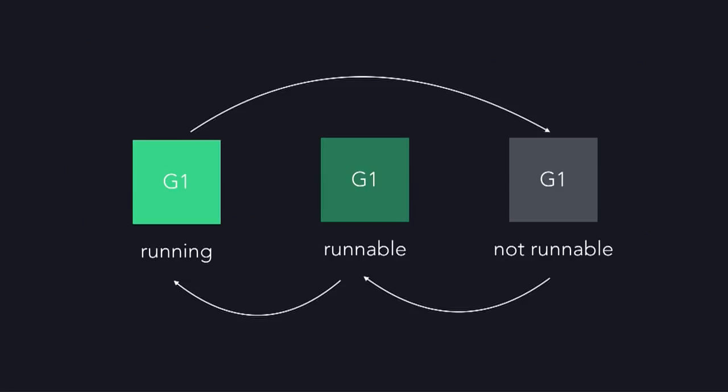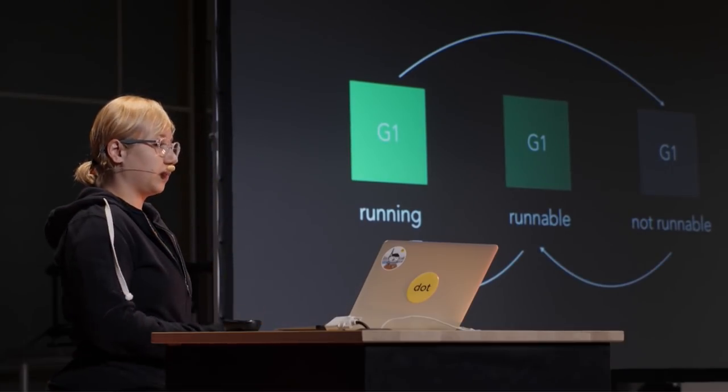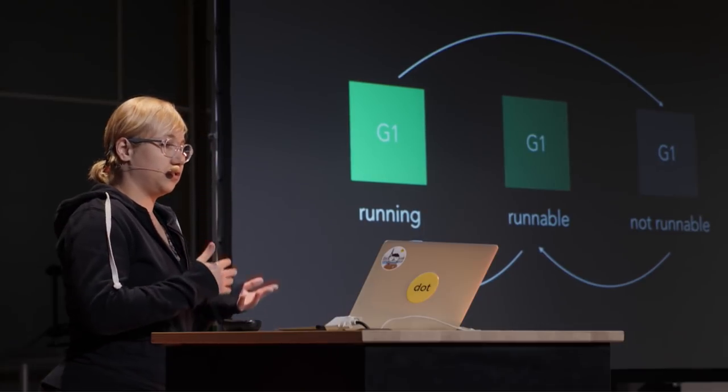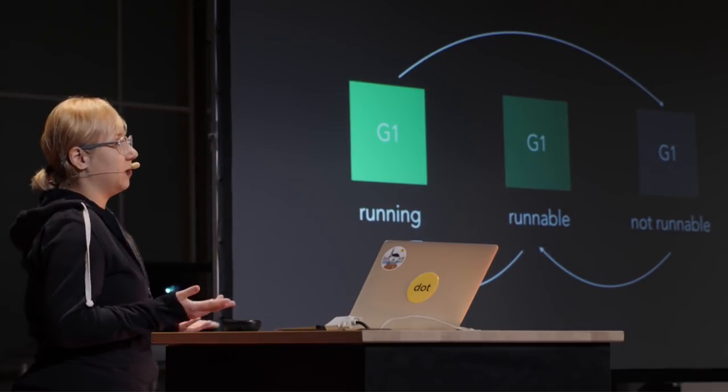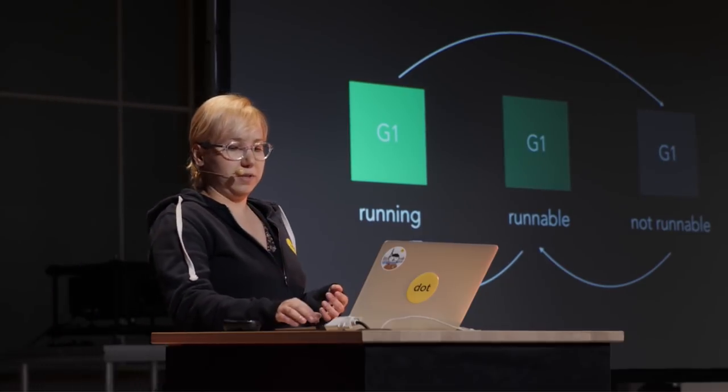The life of a Go routine is simply between these fundamental states. A Go routine is either currently running, or ready to run — runnable but waiting for its turn — or it's not runnable, for example it's blocked and waiting for a system call. At any time, the scheduler's job is to run the runnable Go routines with the currently available capacity.